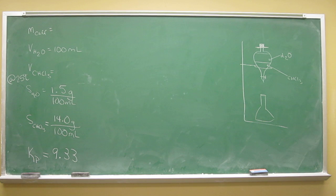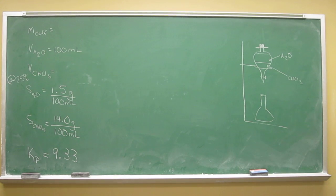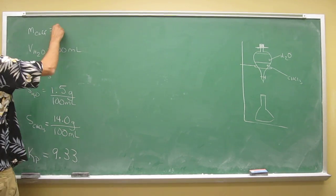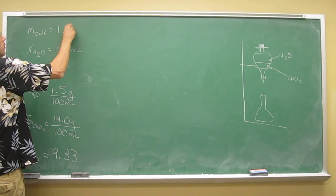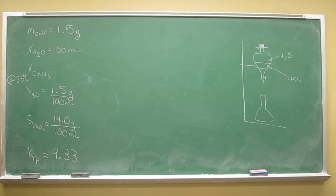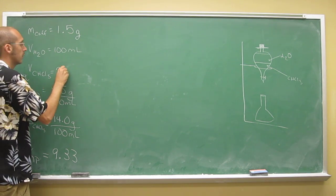In this question we'll consider an aqueous solution of caffeine where we've added 1.5 grams of caffeine. So now we have 1.5 grams of caffeine to 100 mL of water, and then extracted it using one 200 mL portion of chloroform. So now we've got 200 mL of chloroform.